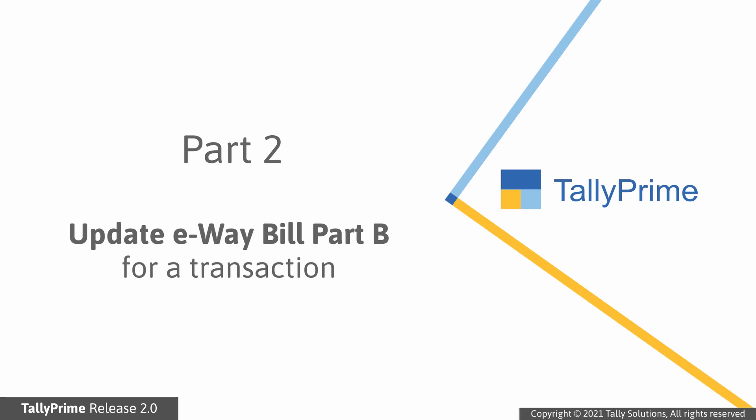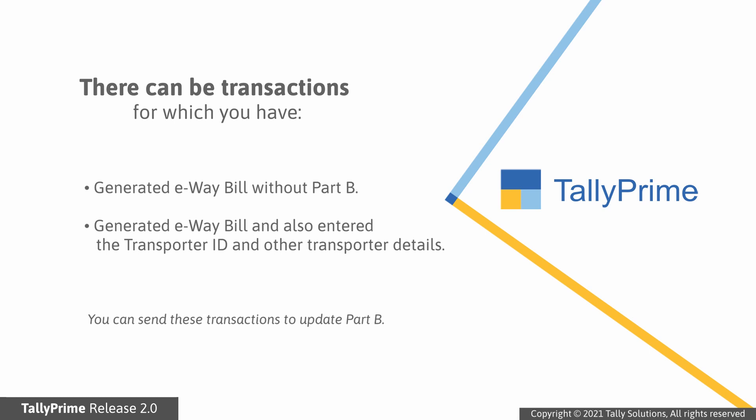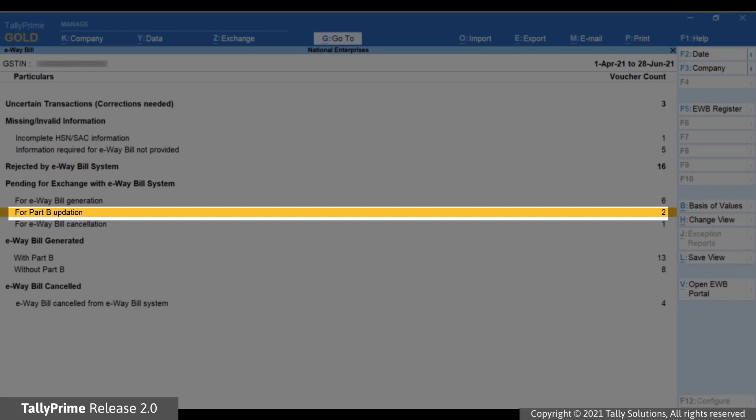Now let's see how to update e-way bill Part B for a transaction. There can be some transactions for which you have generated an e-way bill without Part B. This happens when you do not have transporter details such as transporter ID, vehicle number, and other mandatory information for e-way bill generation with Part B, so you will be updating Part B later. There can also be transactions for which an e-way bill was generated after which you entered the transporter ID and other transporter details; however, you are yet to update Part B. Such transactions will be under For Part B Updation in Pending for Exchange with the e-way bill system.